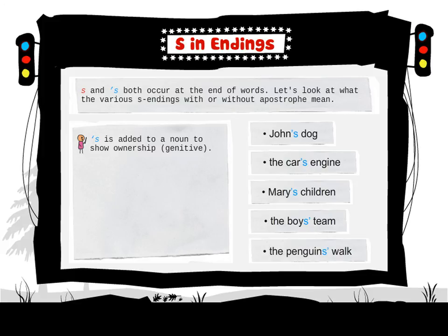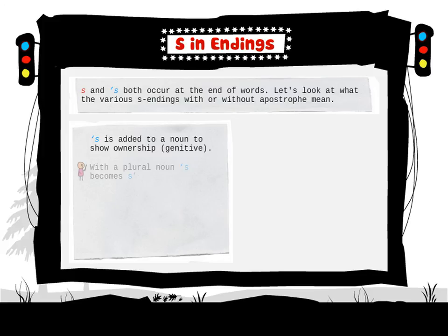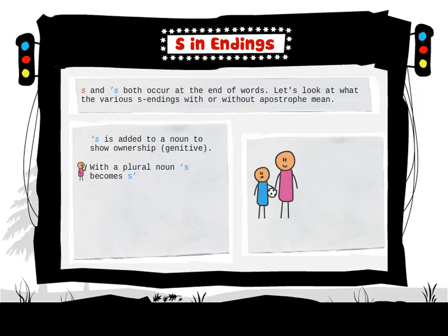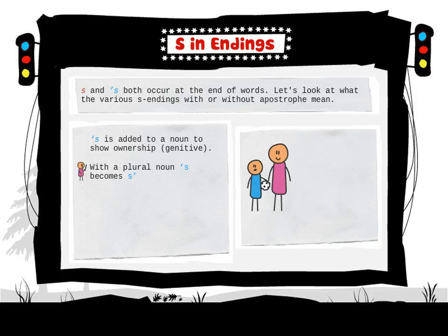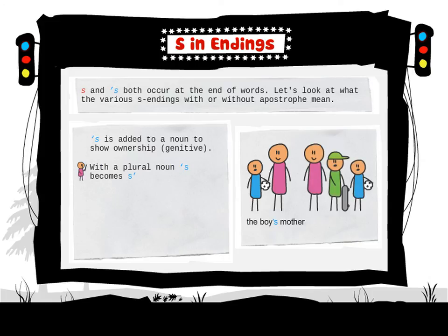With a plural noun, apostrophe S becomes S apostrophe. For example: one boy — the boy's mother; two or more boys — the boys' mother. Note: the penguins walk uses a plain S for the plural verb, not possession.